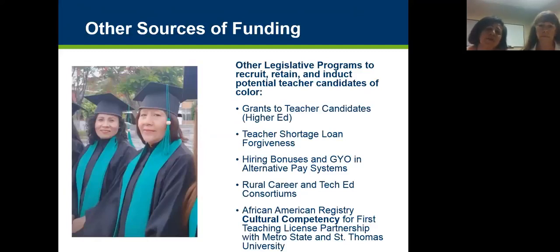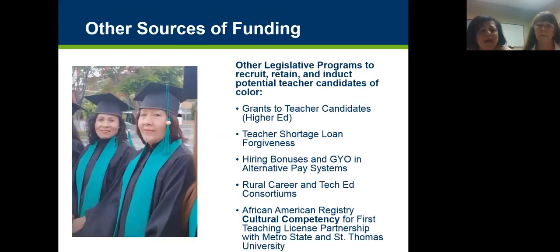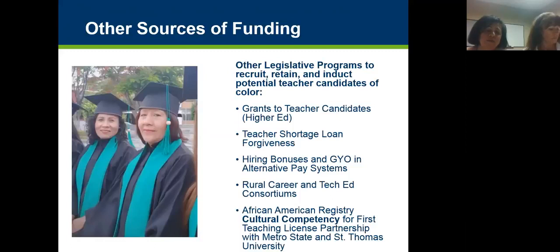Other legislative programs from 2017 include grants to teacher candidates in higher education — approximately $3 million — teacher shortage loan forgiveness for those teaching in priority or focus schools, and hiring bonuses as part of the Grow Your Own alternative pay system. We also have Brookings funds for rural career education and consortiums. This year we also set up funding to an organization called the African American Registry to train students who are seniors into their teaching career on cultural competency. This is a pilot, and the funding will work with two universities to train teachers on cultural competency before they go into the districts.